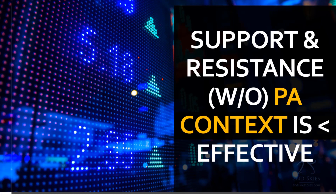Tip number one: support and resistance without price action context is less effective. A lot of traders draw their support and resistance levels but don't pay attention to the price action context around them. You need to reverse this equation. The first thing you need to do is understand the price action context — who's in control of the market, where is the momentum, is it increasing or decreasing, and what kind of trend are we in?